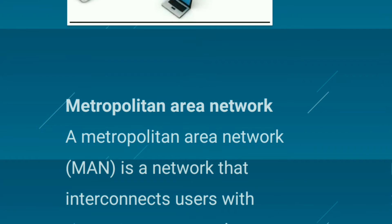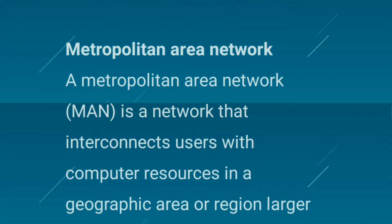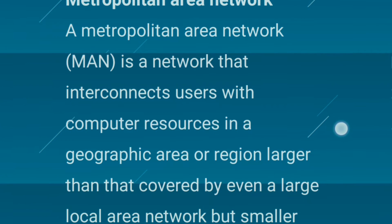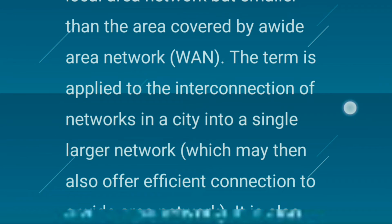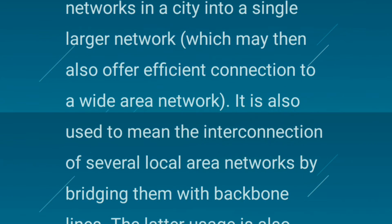A Metropolitan Area Network is a network that interconnects users with computer resources in a geographic area or region larger than that covered by even a large Local Area Network, but smaller than the area covered by a Wide Area Network. The term is applied to the interconnection of networks in a city into a single larger network, which may also offer efficient connection to a Wide Area Network.